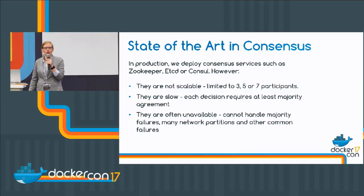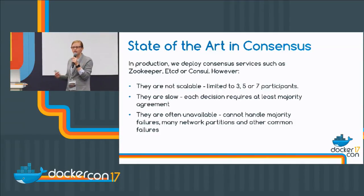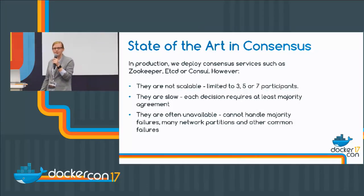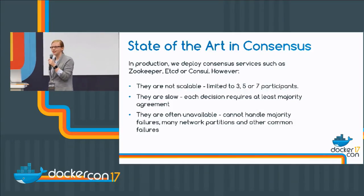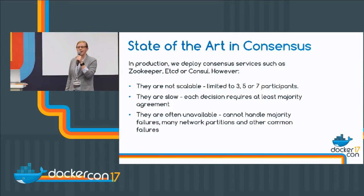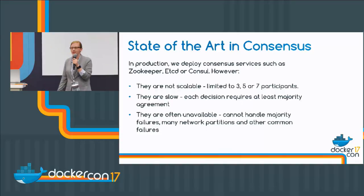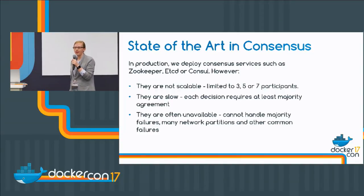These systems use majority agreement, so that's a lot of communication every time you want to do anything. And we've done all this work to make our systems fault tolerant — but the reality is, and I spoke to all sorts of people who deploy these systems in practice, they're often unavailable. The master or the leader in the system becomes a central point of failure.